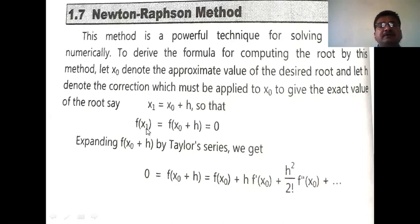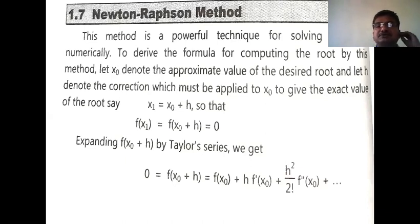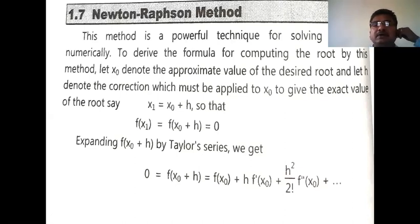Since x₁ is the correct root of the equation f(x) = 0, we have f(x₁) = 0. Therefore we have f(x₀ + h) = 0.